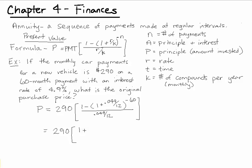We first want to find what the 1 plus .049 divided by 12 to the negative 60th power would be. And this should give us .783095088. And now we will subtract that value from 1.